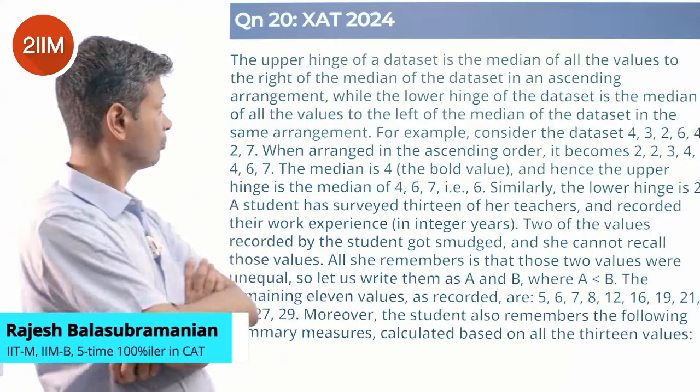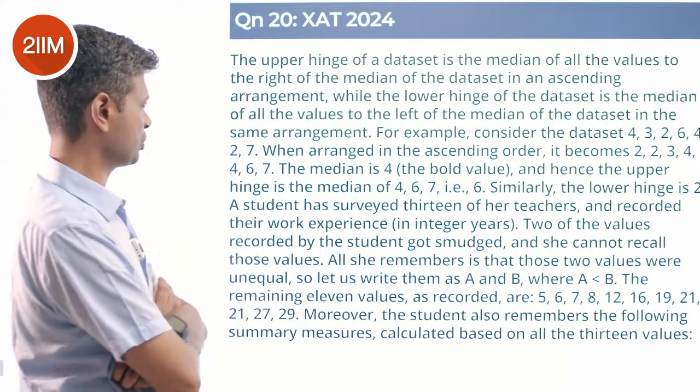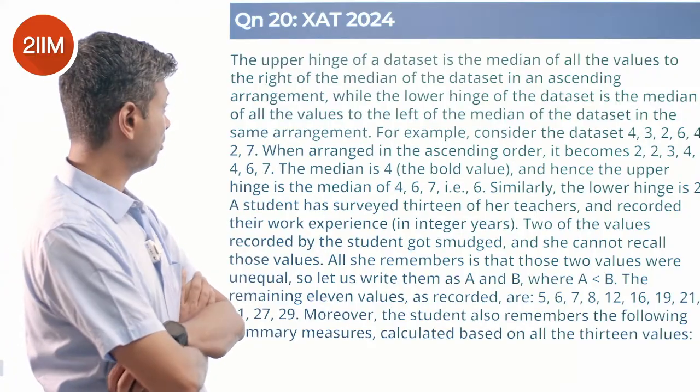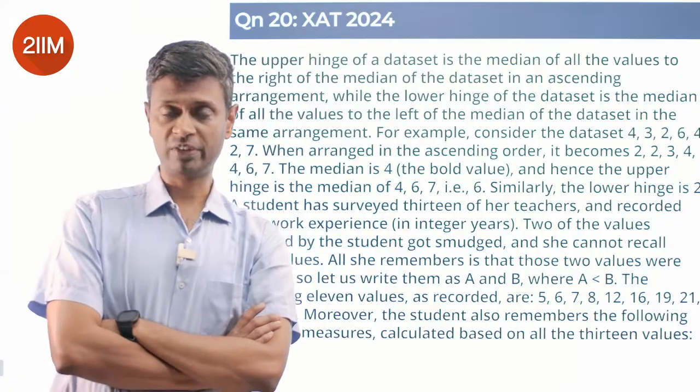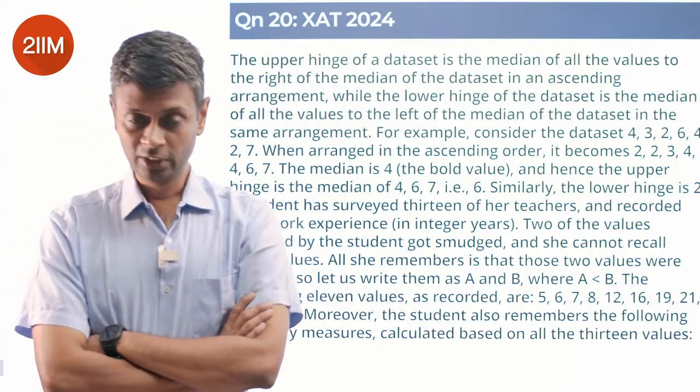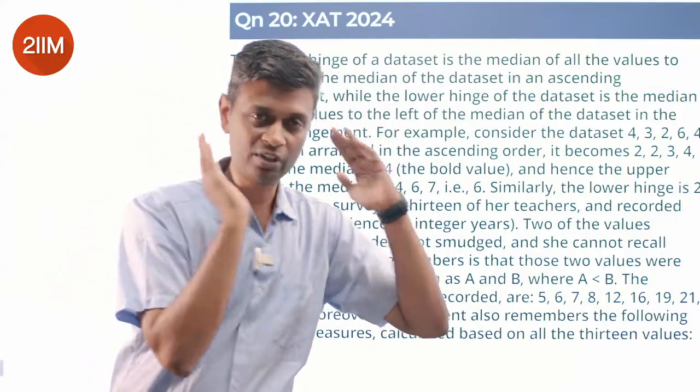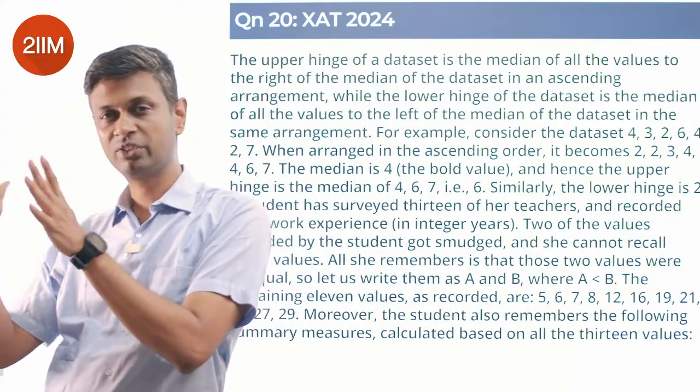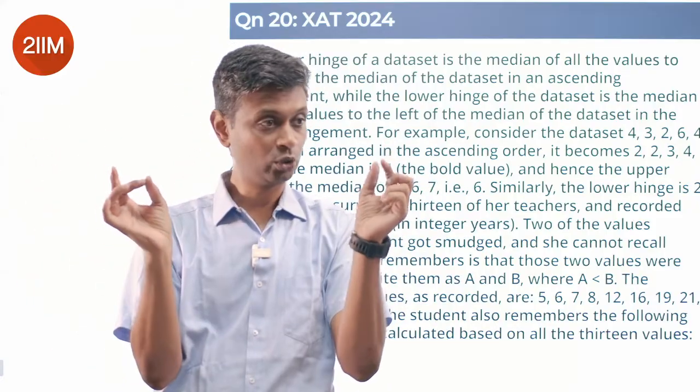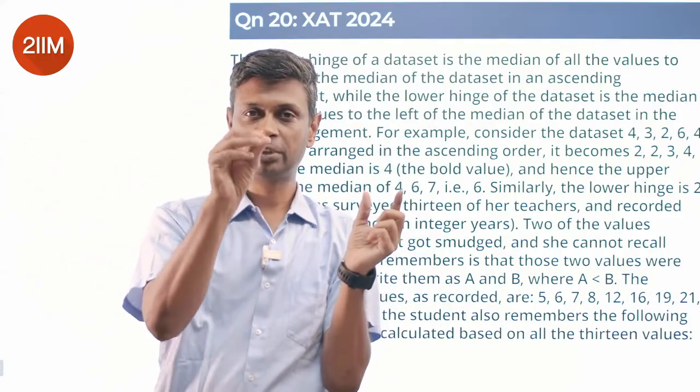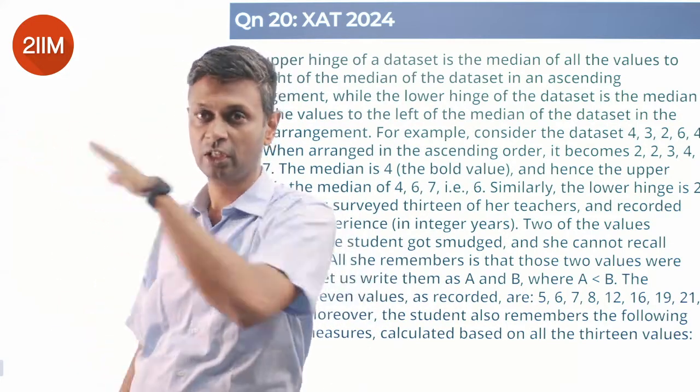The upper hinge of a dataset is the median of all the values to the right of the median of the dataset in an ascending arrangement, while the lower hinge of the dataset is the median of all the values to the left of the median. I did not know this definition, so very thankful for it. You take a big dataset, take the median, take the median of this half which is the lower hinge, and this half which is the upper hinge. The 25th percentile, 50th percentile, 75th percentile, so 0, 25, 50, 75, 100: minimum, lower hinge, median, upper hinge, maximum.